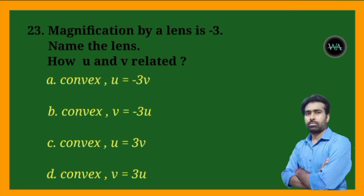Next question: magnification by a lens is minus 3. Name the lens and state how u and v are related.